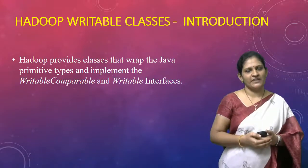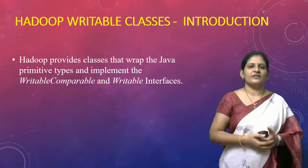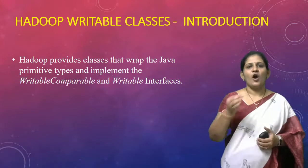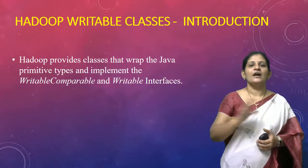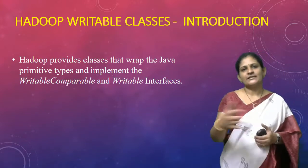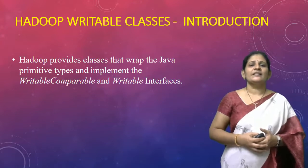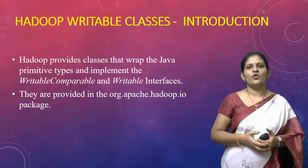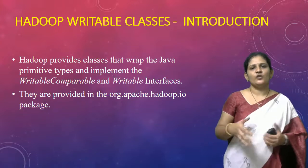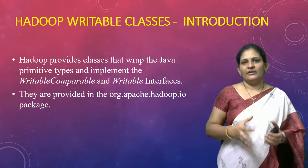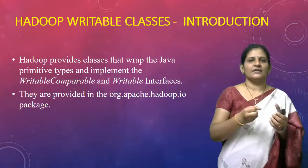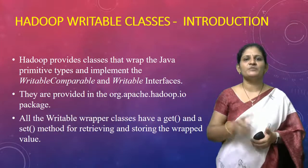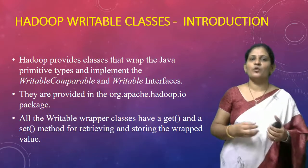Each writable class wraps the Java primitive type values and implements two interfaces: the WritableComparable interface and the Writable interface. All writable classes implement these two interfaces. These classes are present in the package org.apache.hadoop.io. Whatever primitive type data we have, that data will be set into writable class objects using two special methods: the set method and the get method.